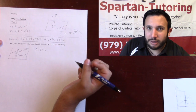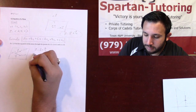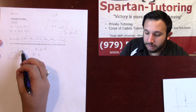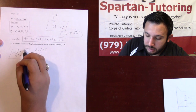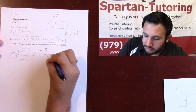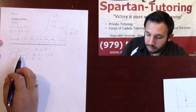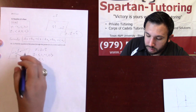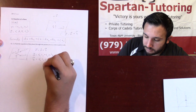These are points, not vectors. So we need to find vector a and vector b. Vector a — using tip minus tail — one minus zero is one, zero minus one is negative one, and one minus one is zero. So vector a is (1, -1, 0). Vector b — using tip minus tail — one minus zero is one, one minus one is zero, and zero minus one is negative one. So vector b is (1, 0, -1).